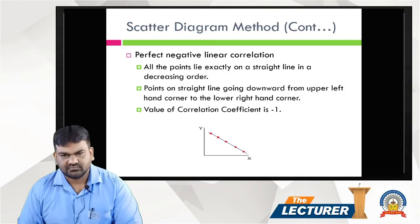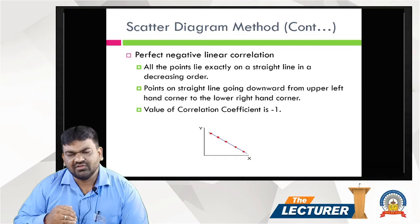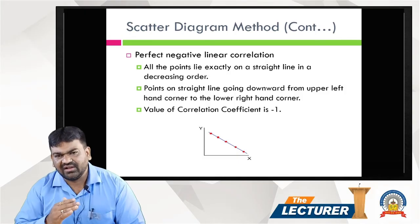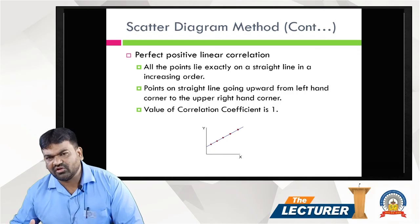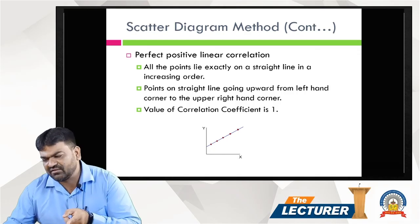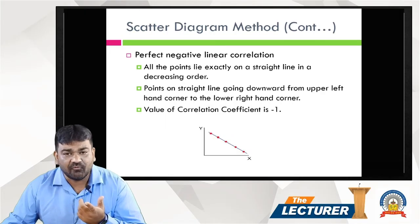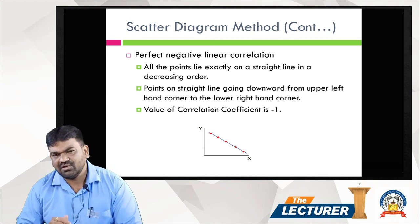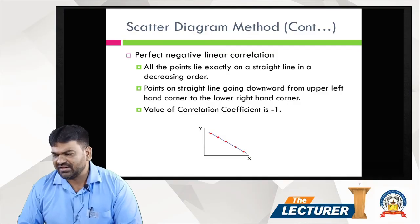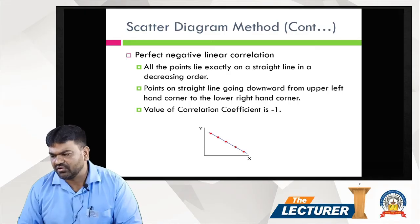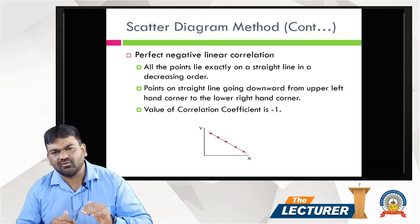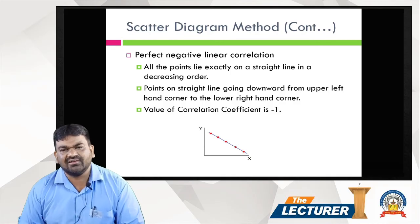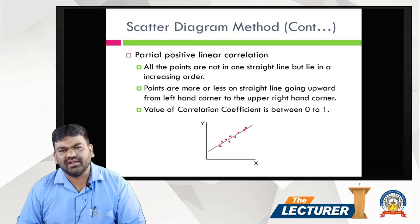Next is Perfect Negative Correlation — the direct opposite of positive. For positive, the line goes upward; for negative, the line goes downward. All the points lie exactly on a straight line in decreasing order, going downward from the upper left-hand corner to the lower right-hand corner. The value of the correlation coefficient is r equals minus 1.